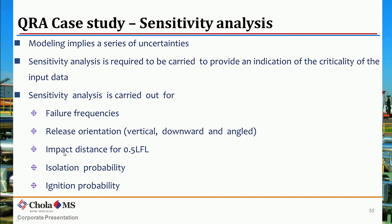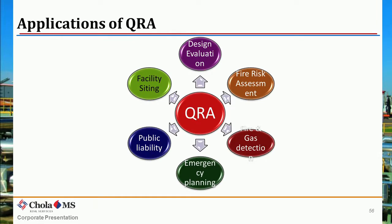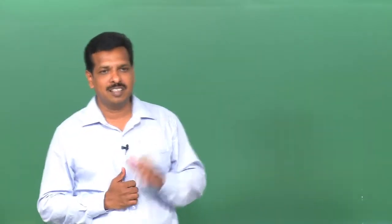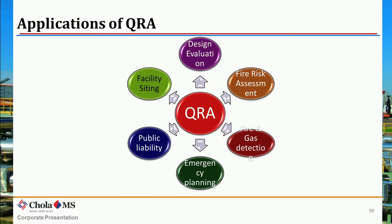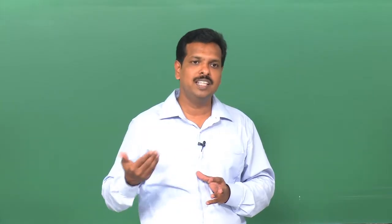In sensitivity analysis, we vary failure frequencies, release orientation, impact distance, and ignition probability — all the key parameters. Having discussed QRA in detail, we need to know where exactly we use it. Key areas and objectives of QRA include: design evaluation, where we evaluate whether pipeline thickness is correct, tank sizing is correct, and material of construction (MOC) selection. These results give inputs to designers to validate their design.